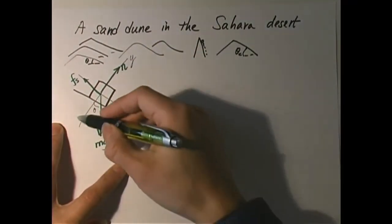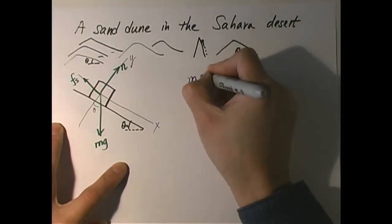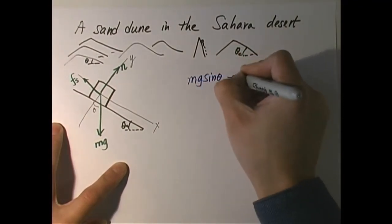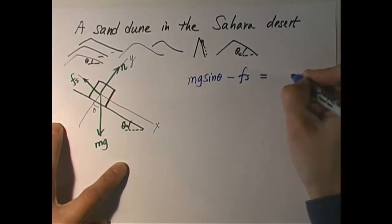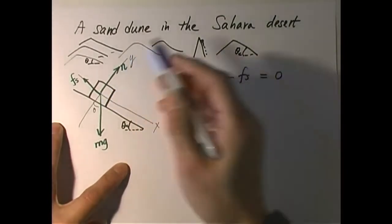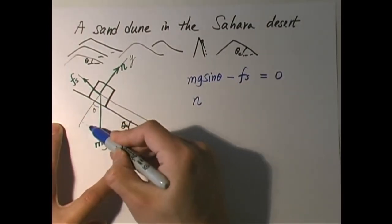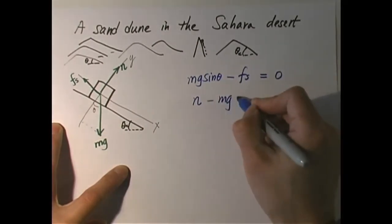In the x direction, I have Mg sine theta as usual, but I also have Fs against it. That is equal to M times A sub x, which is zero because it doesn't move in the x direction. In the y direction, I have N going up and Mg cosine theta going down. So N minus Mg cosine theta equals zero.